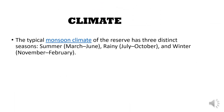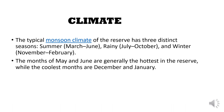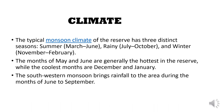The typical monsoon climate of the reserve has three distinct seasons: summer from March to June, rainy from July to October, and winter from November to February. The months of May and June are generally the hottest in the reserve, while December and January are the coolest. The southwestern monsoon winds bring rainfall to the area during the months of June to September.